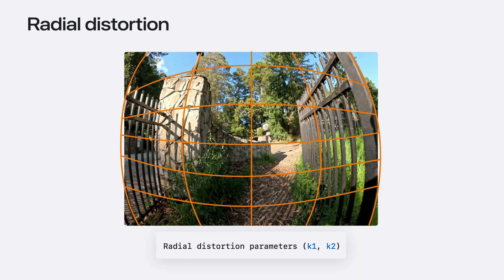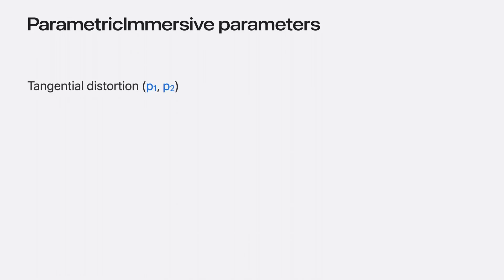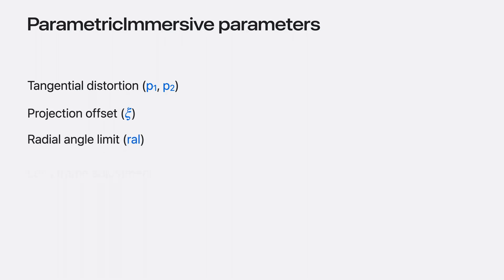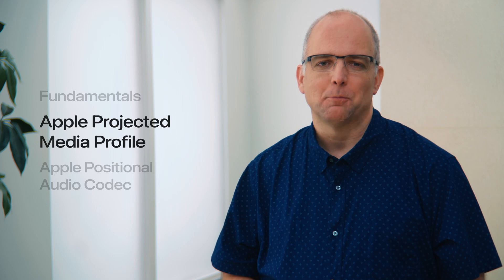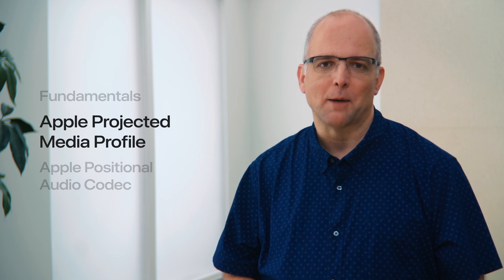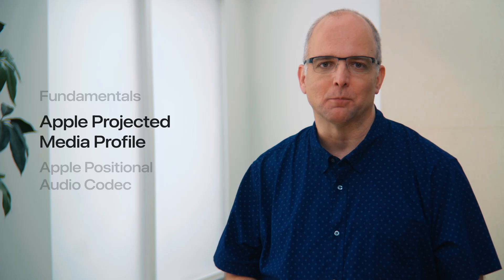In this image, the fence posts appear curved towards the edge of the lens. Other lens distortion characteristics, such as tangential distortion, projection offset, radial angle limit, and lens frame adjustments, can be specified in the parametric immersive projection as well. Now that I've covered the fundamentals, I'll provide an overview of how to use Apple's APIs to interact with Apple Projected Media Profile content.